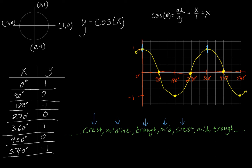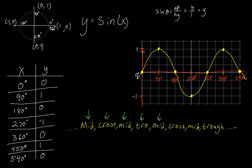The key point: the graph of cosine starts at a crest, whereas the graph of sine starts at a midline. These five points — crest, midline, trough, midline, crest — are the critical points and constitute one full period of 360 degrees. These are the parent functions for sine and cosine. In the next couple of videos, we'll be looking at different transformations you can make to them.